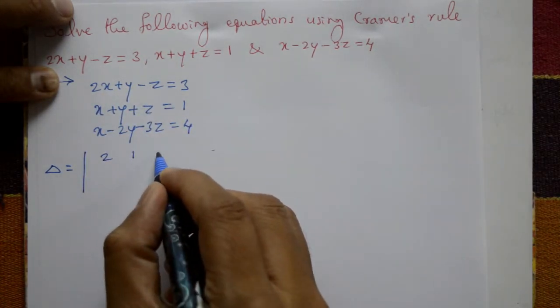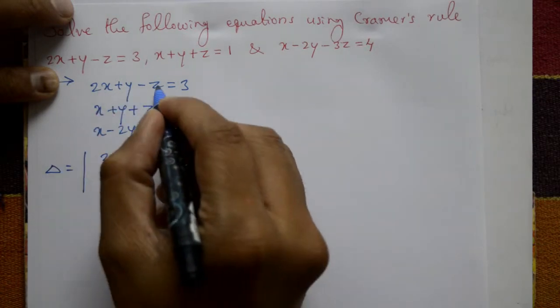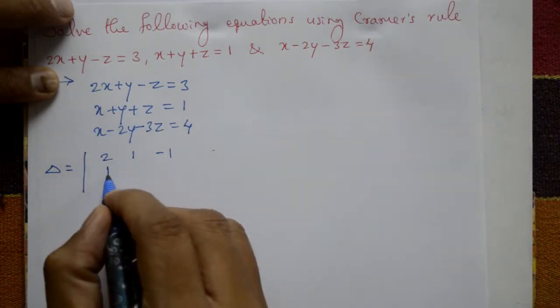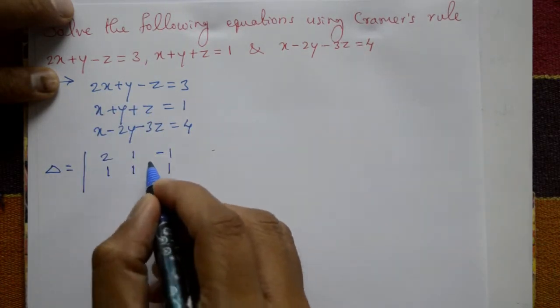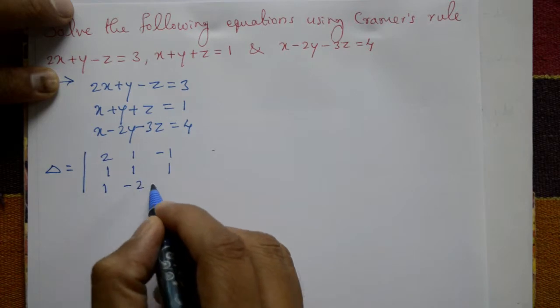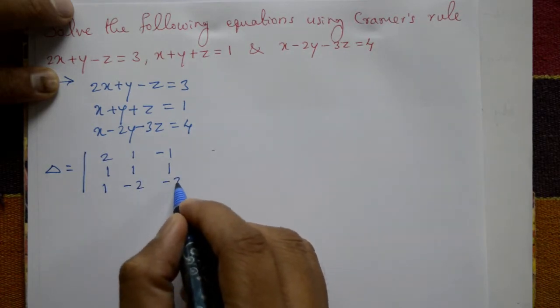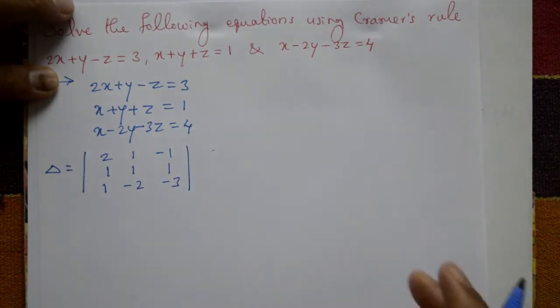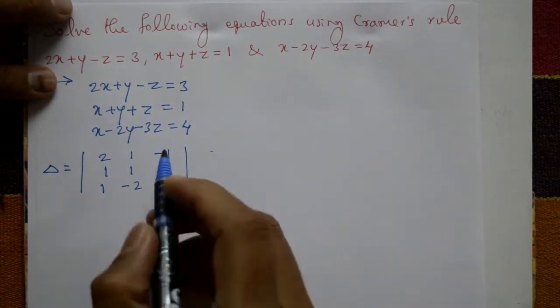The determinant is: first row 2, 1, -1 (from the first equation); second row 1, 1, 1 (from the second equation); third row 1, -2, -3 (from the third equation). Now expand this determinant.